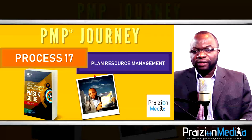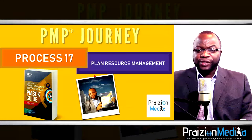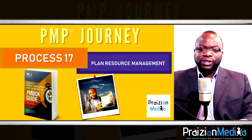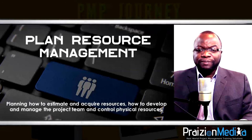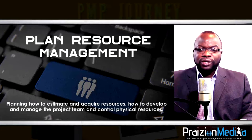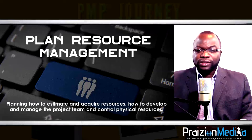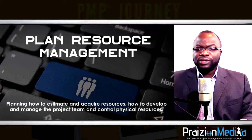Process 16: Plan quality management. This is where we identify the quality standards that need to be adhered to on the project. The output is a quality management plan. Process 17: Plan resource management. This is where you put together a resource management plan that guides the project manager and team on how to acquire resources — human, equipment, materials, supplies, and even facilities.